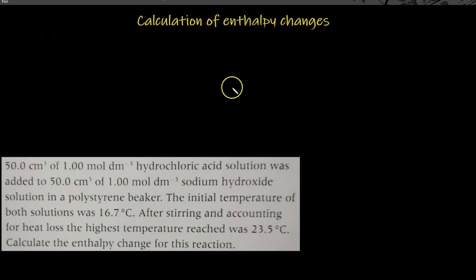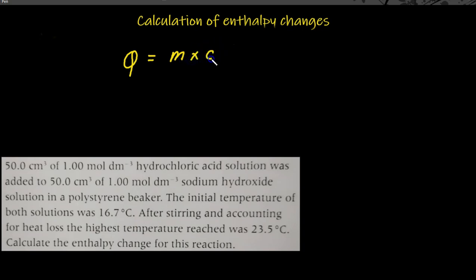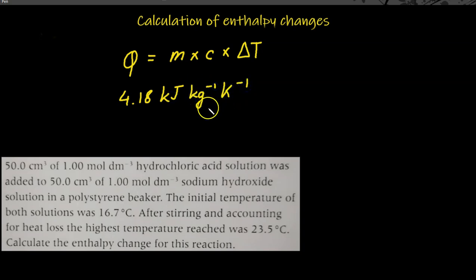To calculate enthalpy changes, the heat involved in changing the temperature of any substance can be calculated from the equation: Q equals M times C times delta T, where Q is the heat energy, M is the mass, C is the specific heat capacity, and delta T is the change in temperature. The specific heat capacity of water is 4.18 kilojoules per kg per Kelvin, meaning it requires 4.18 kilojoules of energy to raise the temperature of 1 kilogram of water by 1 Kelvin. Enthalpy changes are normally quoted in kilojoules per mole.